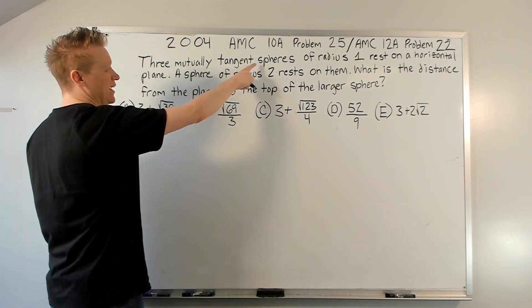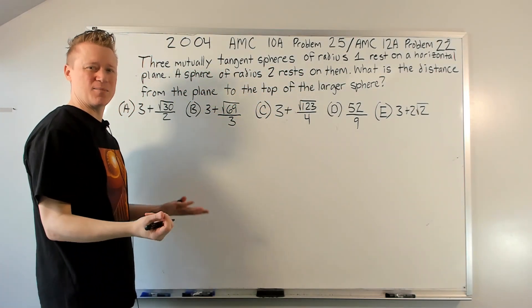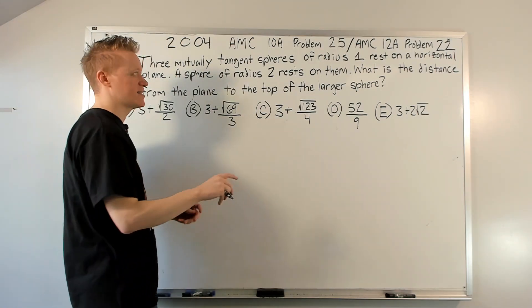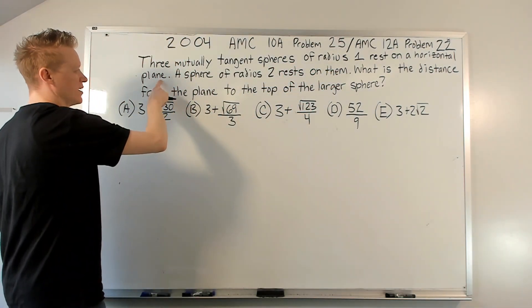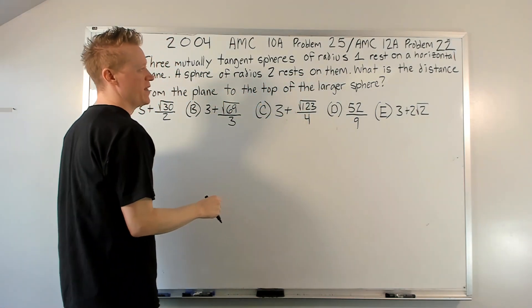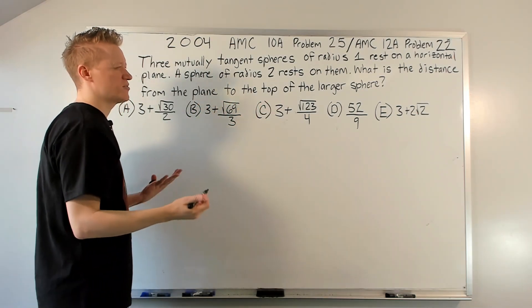Three mutually tangent spheres. Okay, so already we see three dimensions and we go kind of panic a little bit. Just get over it, read on, and try to process. Okay. Of radius one, rest on a horizontal plane. A sphere of radius two rests on them. What is the distance from the plane to the top of the larger sphere?